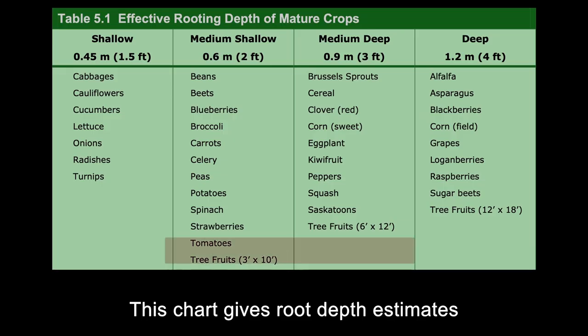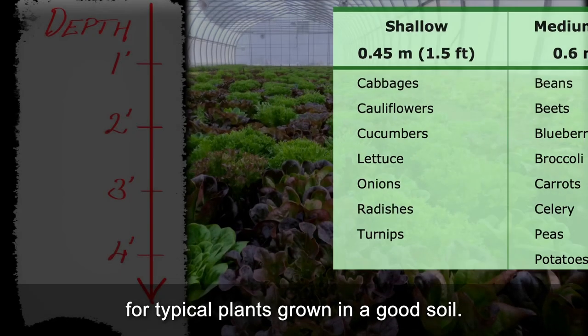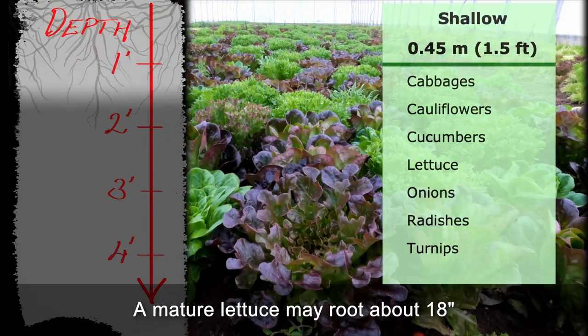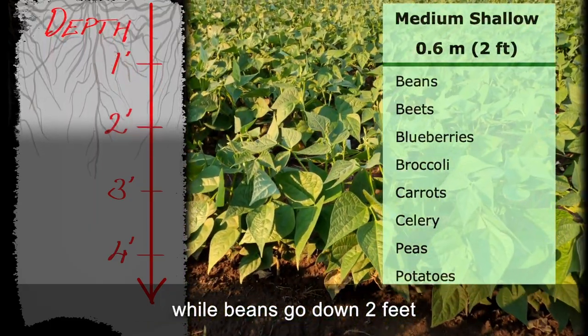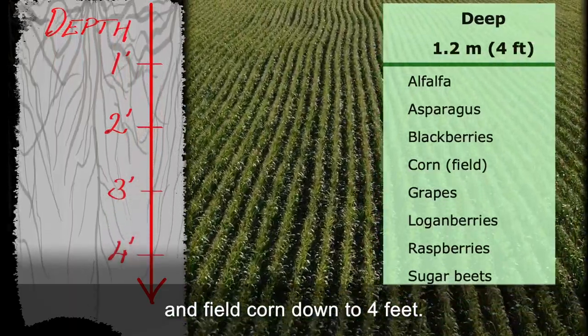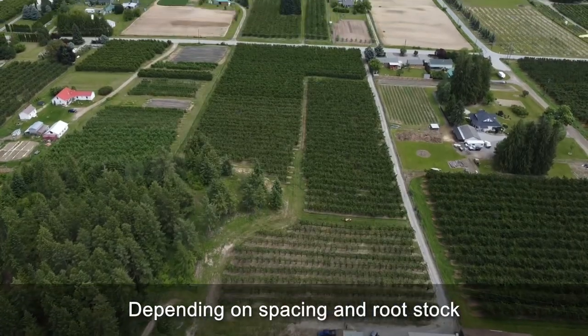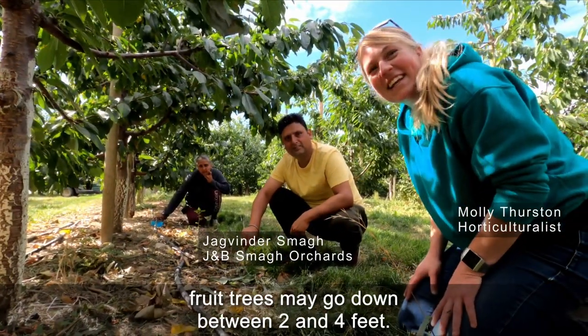This chart gives root depth estimates for typical plants grown in a good soil. A mature lettuce may root about 18 inches, while beans go down two feet, squash perhaps three feet, and field corn down to four feet. Depending on spacing and rootstock, fruit trees may go down between two and four feet.